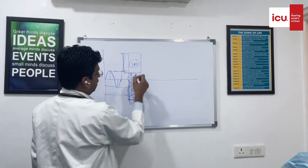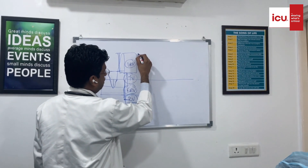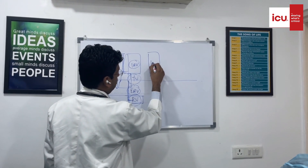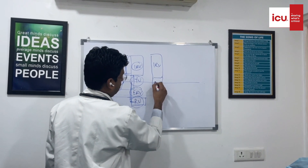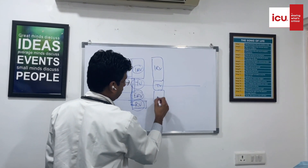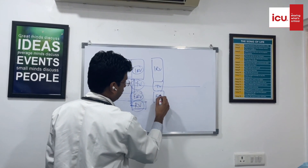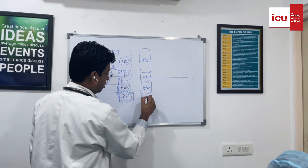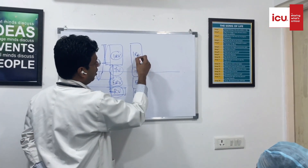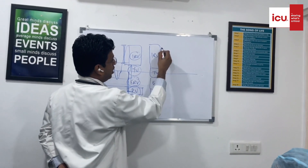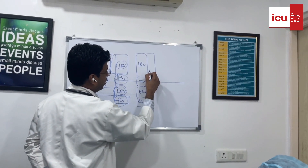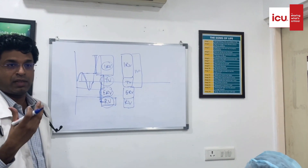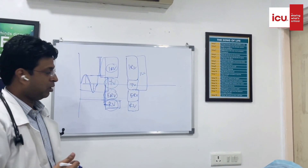Inspiratory reserve volume plus tidal volume — if I combine these two — this is your inspiratory lung capacity. This is the total inspiratory capacity of your lung.